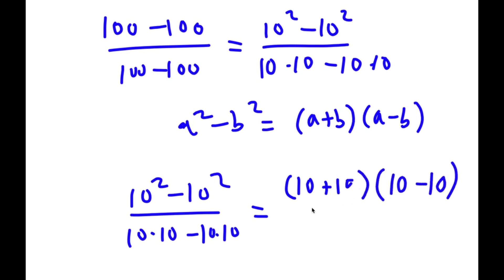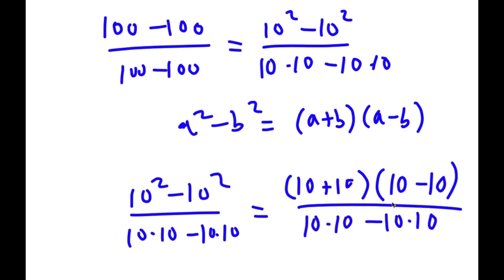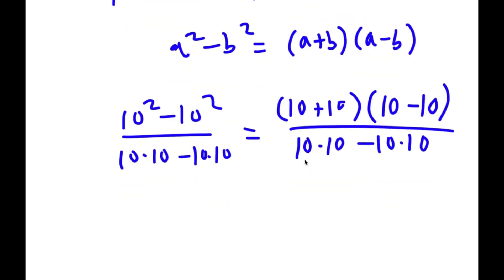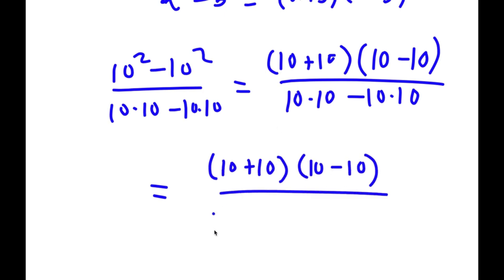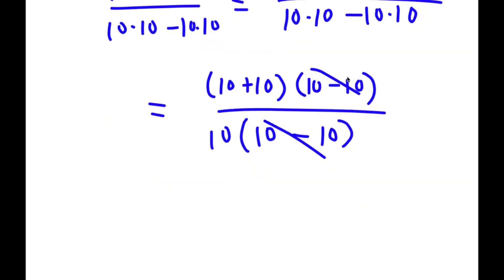Now from the denominator, if I factor out 10 from the denominator, I get 10 times — all that's going to be left is 10 minus 10. And now I'm simply going to cancel out these two 10 minus 10s.